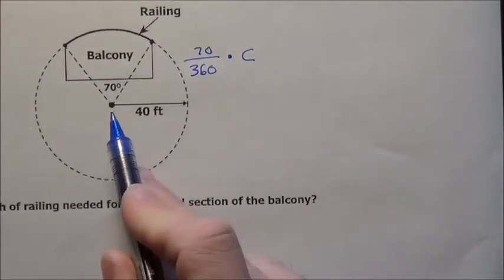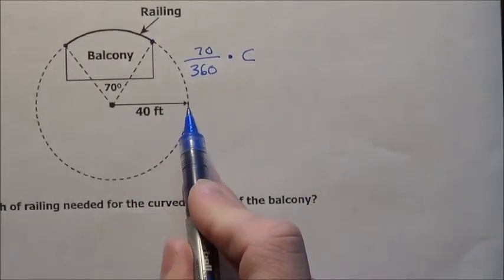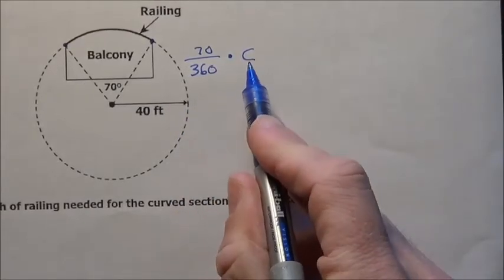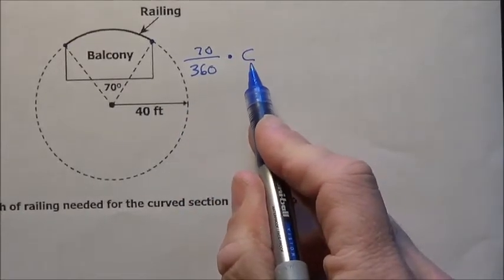Now, I just need to know what the circumference is. That's why they gave me the 40 here, and they had to. Remember, for the circumference, I just use pi times diameter.